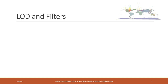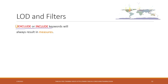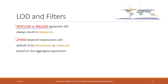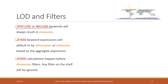LOD and filters — there are some interactions between LOD and filters. First, EXCLUDE and INCLUDE will always generate measures. FIXED, depending on the situation, can generate dimensions or measures. One important thing about FIXED is that a fixed calculation always happens before the dimension filters.